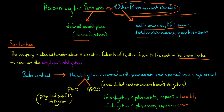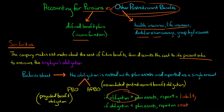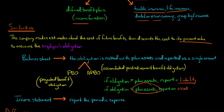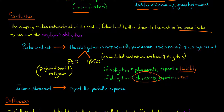Similarly, with other post-retirement benefit plans, you're not just going to see APBO on the balance sheet — it's going to be netted with the plan assets. If the amount of the obligation is higher than the amount of the plan assets, there's going to be a liability recorded on the balance sheet. If the plan assets are higher than the obligation, then we're going to have an asset on the balance sheet. This works the same way whether we have a pension plan or an other post-retirement benefit plan.